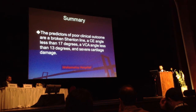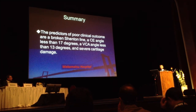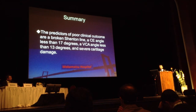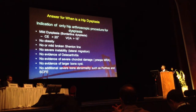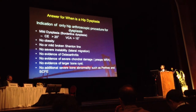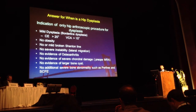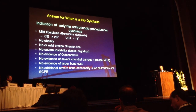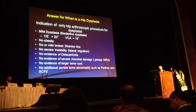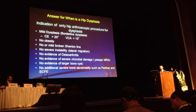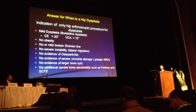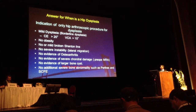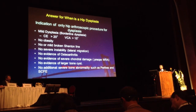In summary, the predictors of poor clinical outcome are: broken Shenton line, CE angle less than 17 degrees, VCE angle less than 13 degrees, and severe cartilage damage. The indication for isolated hip arthroscopy surgery with dysplasia is mild dysplasia: CE angle over 20 degrees, VCE angle over 15 degrees, no obesity, no broken Shenton line, no evidence of osteoarthritis, no severe cartilage damage, larger labrum, and no additional severe bony abnormalities such as those of the spino-pelvic regions.